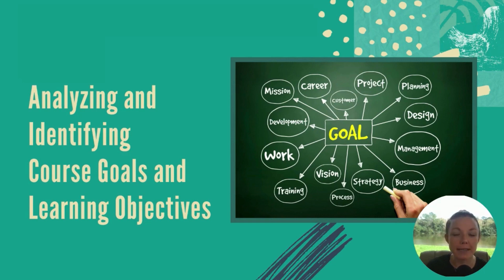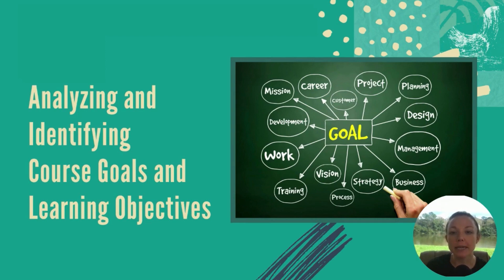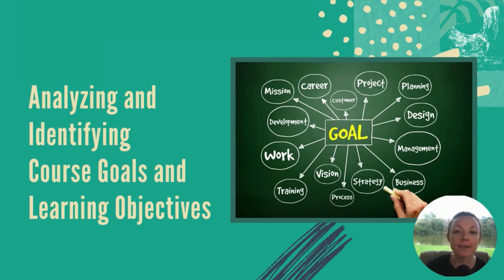Once you've conducted a goal analysis and have a solid goal statement, you will then write and analyze the learning objectives. The learners need to have a clear understanding as to what is expected of them — what they're able to know and be able to do as a result of the course. These statements are known as learning objectives. Learning objectives describe what the learners can do and what they should be able to complete in a module of the course. They're typically derived from the goal analysis. I'll teach you the ABCDs of writing learning objectives, terminal objectives versus enabling objectives, and how to conduct a skills analysis and develop your learning objectives.